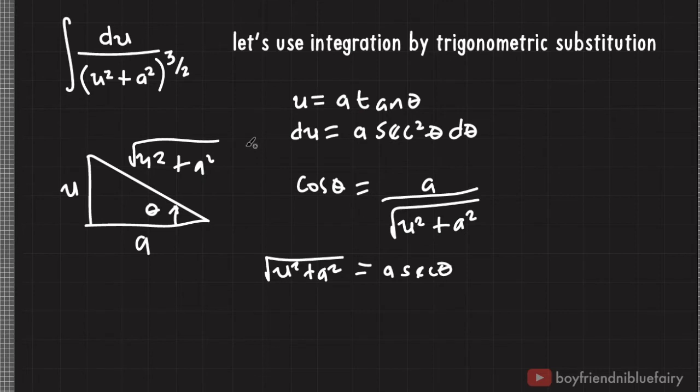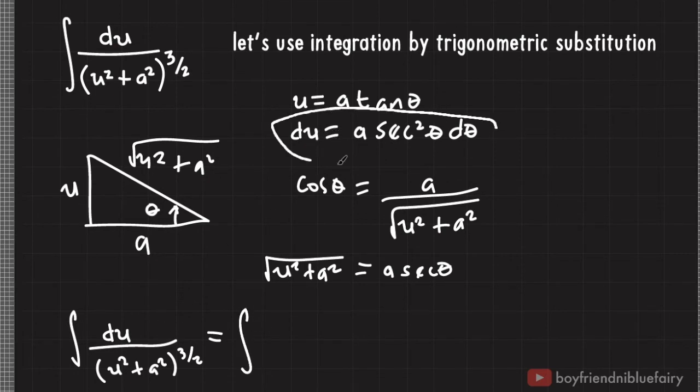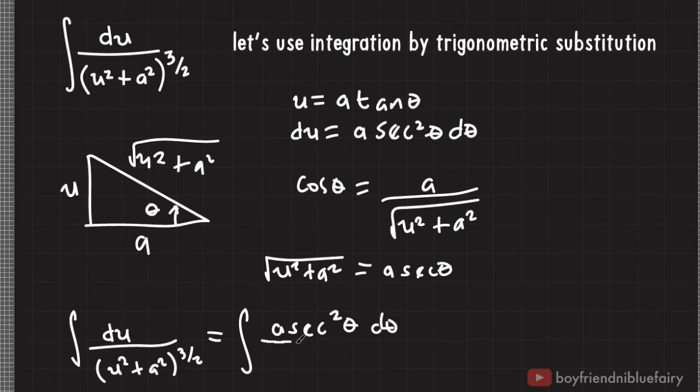Now that we have this expression, we can replace our original integral with trigonometric expressions. Let me rewrite it here. Integral of du divided by quantity u squared plus a squared raised to 3 halves equals integral of a secant squared theta d theta divided by this term. And this term is raised to 3 because this is raised to 3 halves.